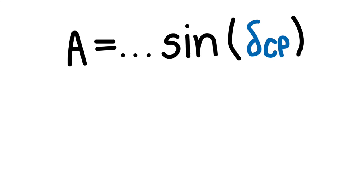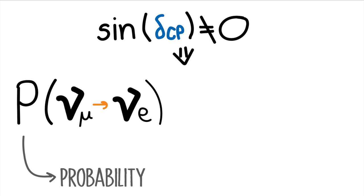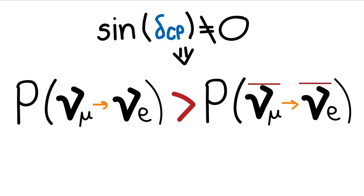But how are neutrinos going to help answer the matter-antimatter asymmetry problem? In the oscillation constants, there is a phase parameter called delta-CP. We can just think of this as an angle — it appears in the argument of a sine function. If delta-CP is different from zero, pi, or two pi — that is, if the sine is different from zero — muon neutrinos oscillate to electron neutrinos a little bit more than muon anti-neutrinos oscillate to electron anti-neutrinos, or a little bit less, depending on whether delta-CP is positive or negative. This may be a subtle effect, but it is a necessary condition for the explanation of the matter-antimatter asymmetry.